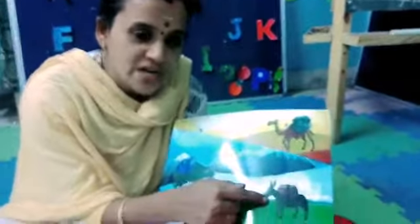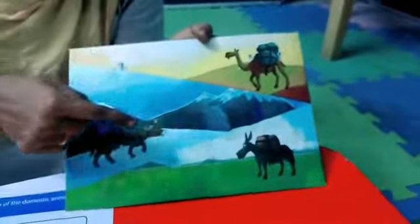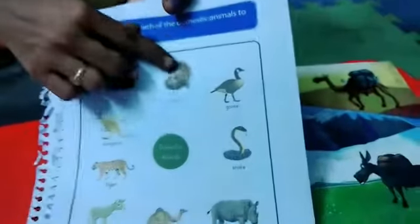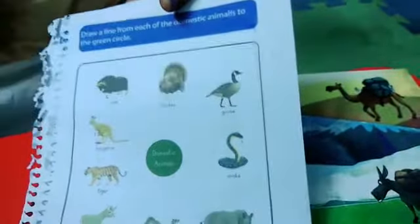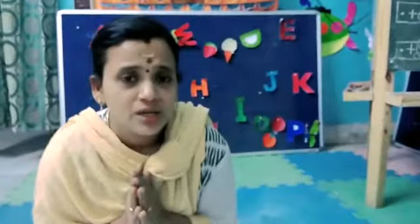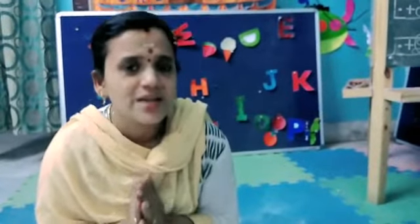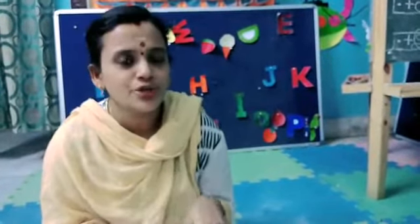Okay kids, can you understand? Today I taught you five new domestic animals — camel, donkey, yak, turkey and goose. These five animals are also very helpful for us. I hope everyone understood this concept.